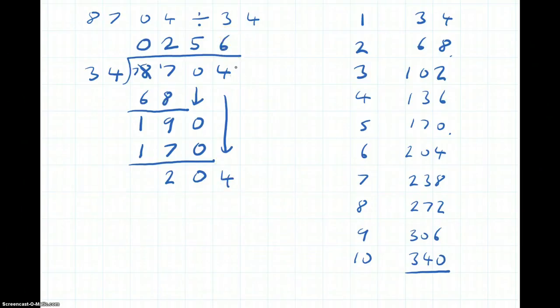We can finish off by doing 6 34s are 204. And we do it in a subtraction. And we get 0. Okay.